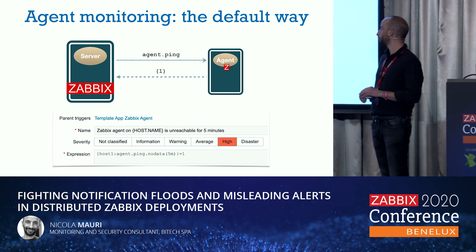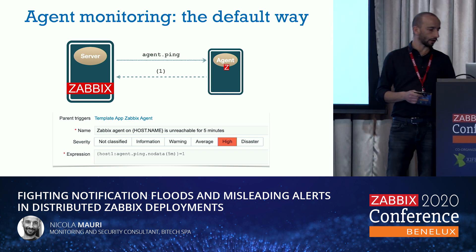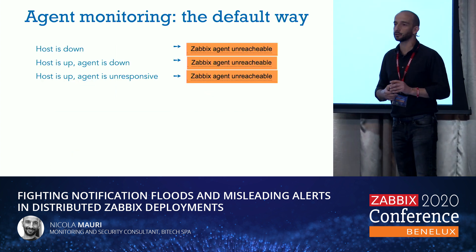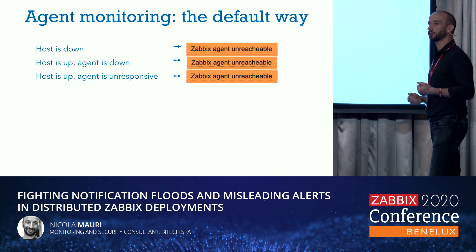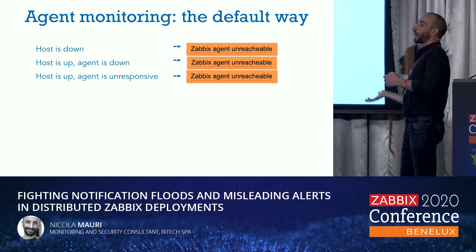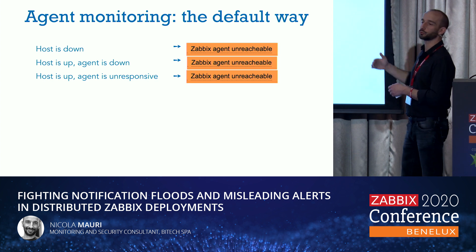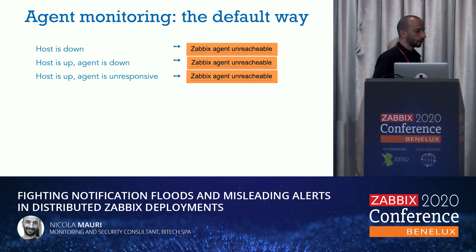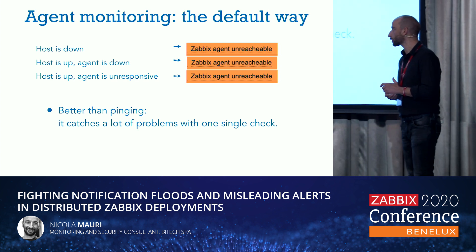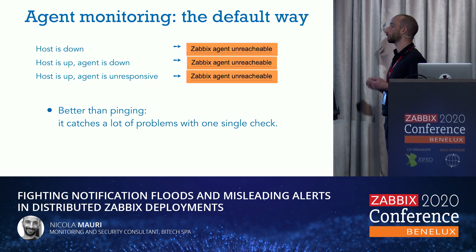This is quite useful because this trigger can catch a lot of problematic situations. For example, if the host is down, but also if the host is up but the agent is down, we get no data. If the agent is unresponsive, we get no data. So it's better than pinging — it catches a lot of problems with one single check — but it doesn't tell us what problem we have.